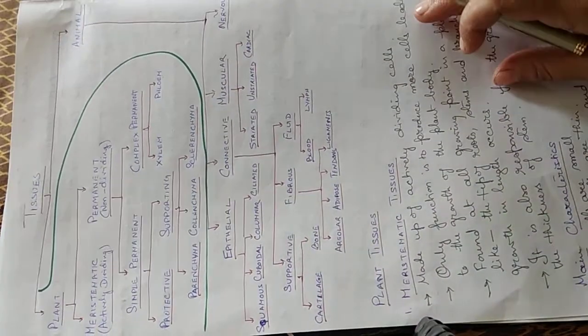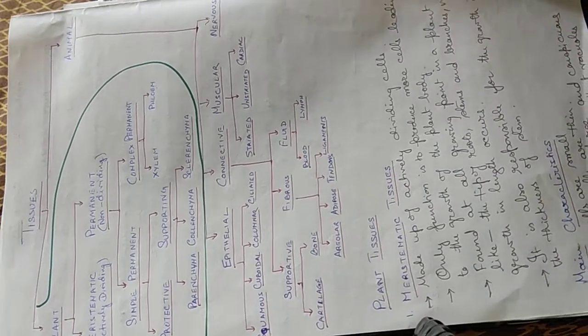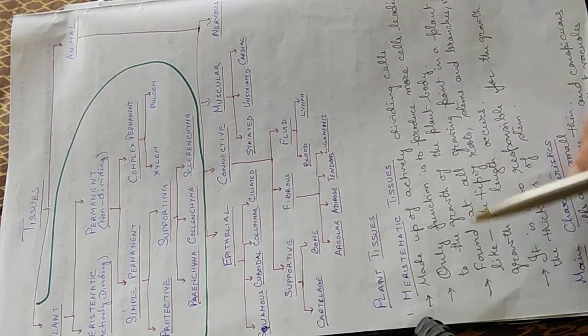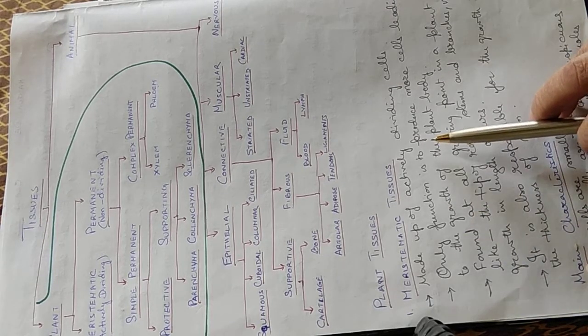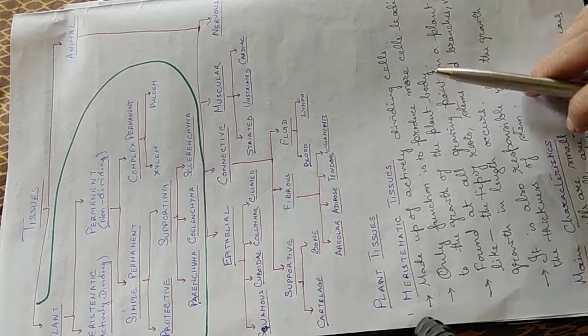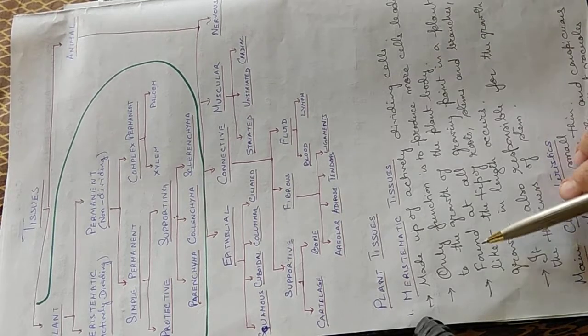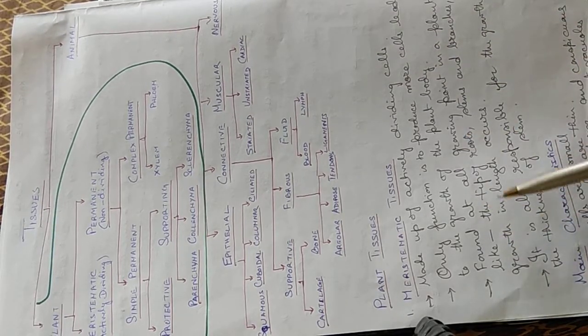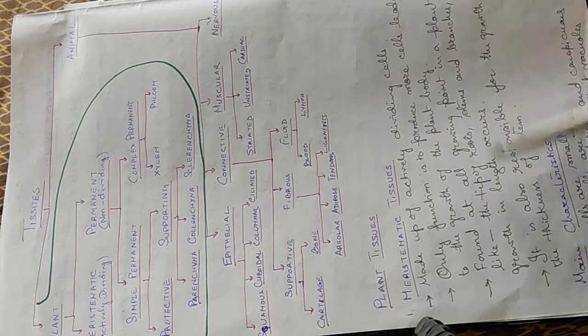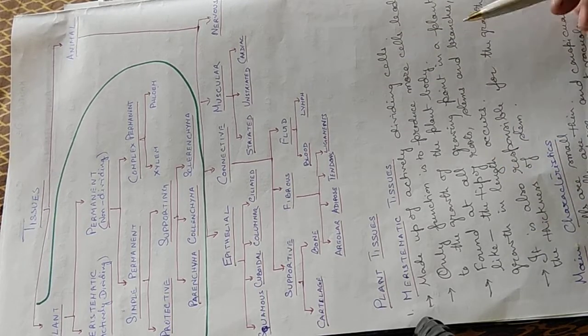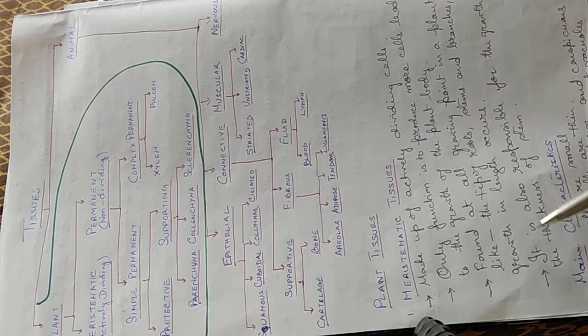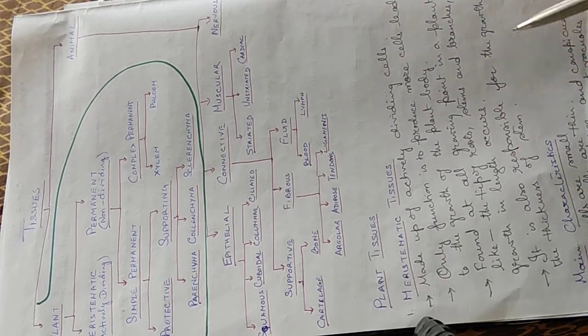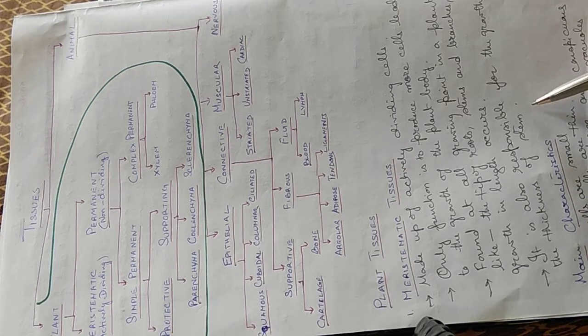Now the plant tissues. The meristematic tissues, they are made up of actively dividing cells. The only function of these cells is to produce more cells leading to the growth of the plant body. Found at all growing points in a plant, like the tip of the roots, stems, and branches where growth in length occurs. It is also responsible for the growth in the thickness of the stem.